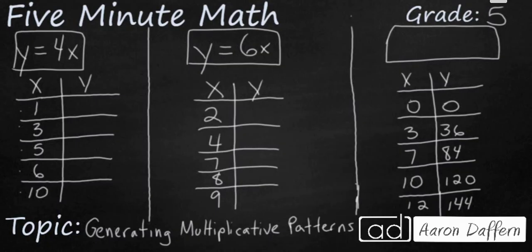This first problem on the left, we are simply taking our x value and multiplying it by 4 because we have 4 times x. So I'm going to multiply 1 times 4 is 4, 3 times 4 is 12, 5 times 4 is 20, 6 times 4 is 24, and then 10 times 4 is 40.